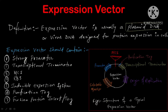Expression vectors have many characteristics similar to cloning vectors, but they have certain additional characteristics that are very important for protein expression as well as purification. Some important characteristics of the expression vector: first of all, they should have very strong promoters, so that at the end we get a large amount of mRNA.